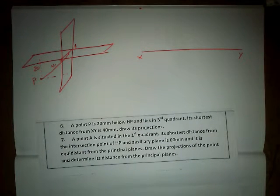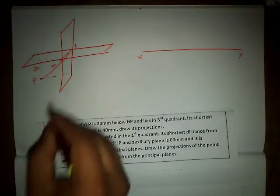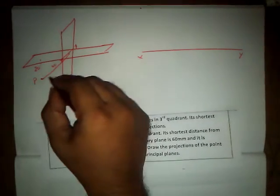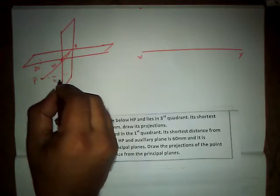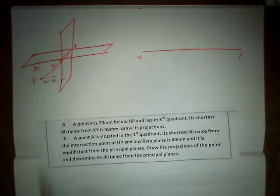So we don't know how much behind the point is. Here he didn't give how much behind. We have the shortest distance and the below HP distance. So let us consider the shortest distance as X.